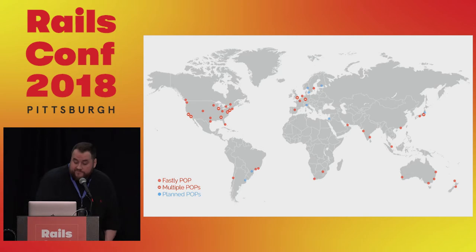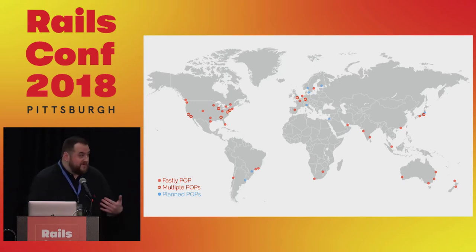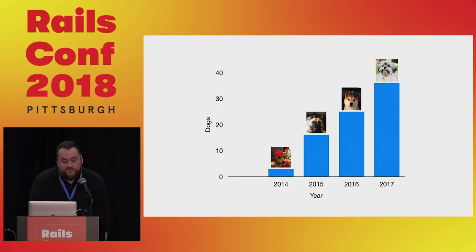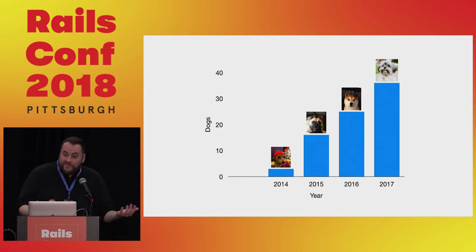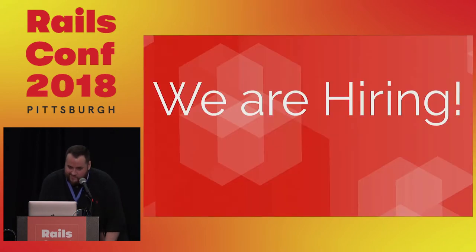We have servers all over the world which serve more than 14 trillion — with a T — requests each month. This constitutes more than 10% of all internet traffic, which still kind of blows my mind because it was not always that large. We also employ the owners of 100% of the world's best dogs. We are currently hiring Ruby application engineers.